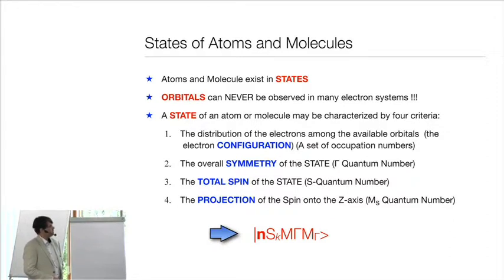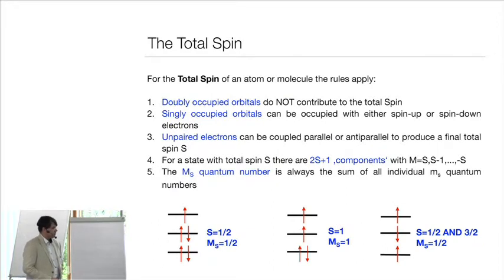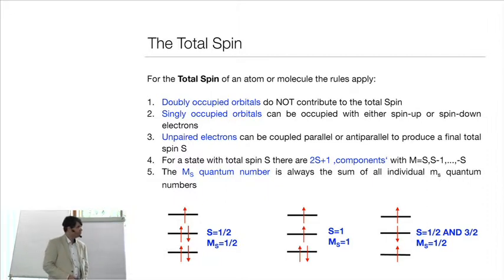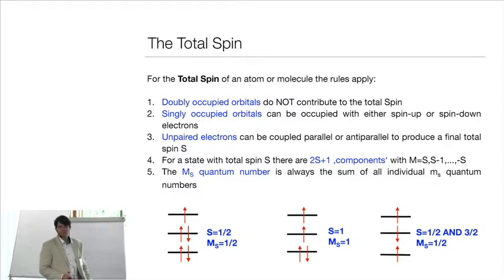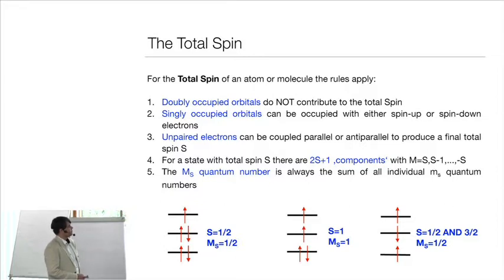One important aspect of electronic states, especially for transition metal complexes, is the total spin. Since spin is counterintuitive — even the spin of one electron is counterintuitive — the spins of many electrons might be even more so. But you will not be able to understand anything about magnetism if you don't deal with the total spin. Doubly occupied orbitals do not contribute to total spin because the two electrons are simply paired — their magnetism annihilates.